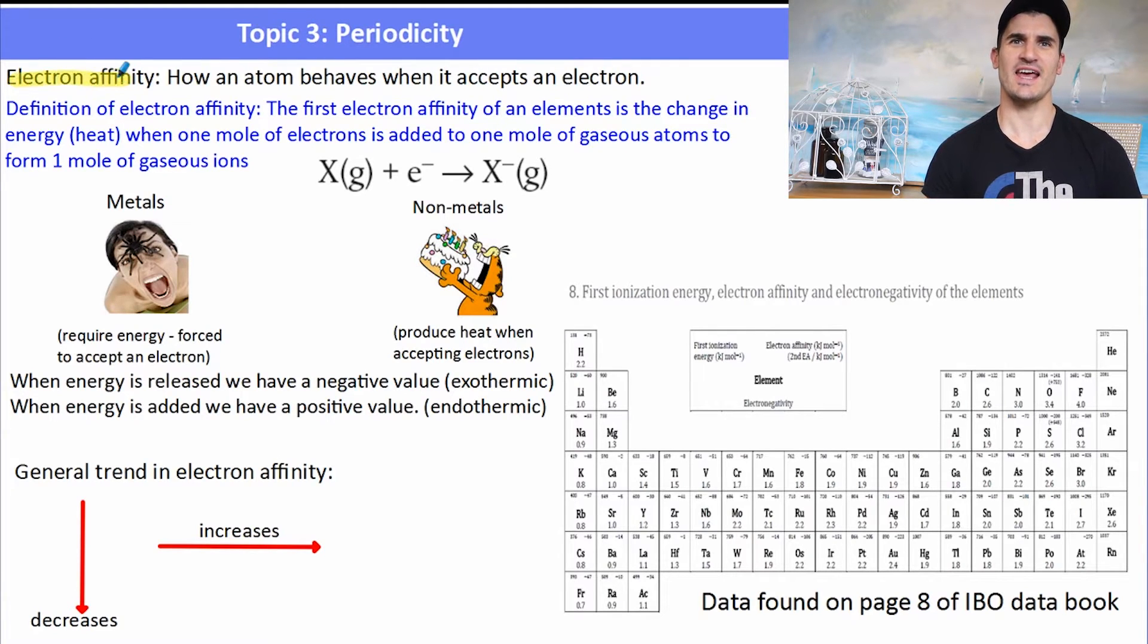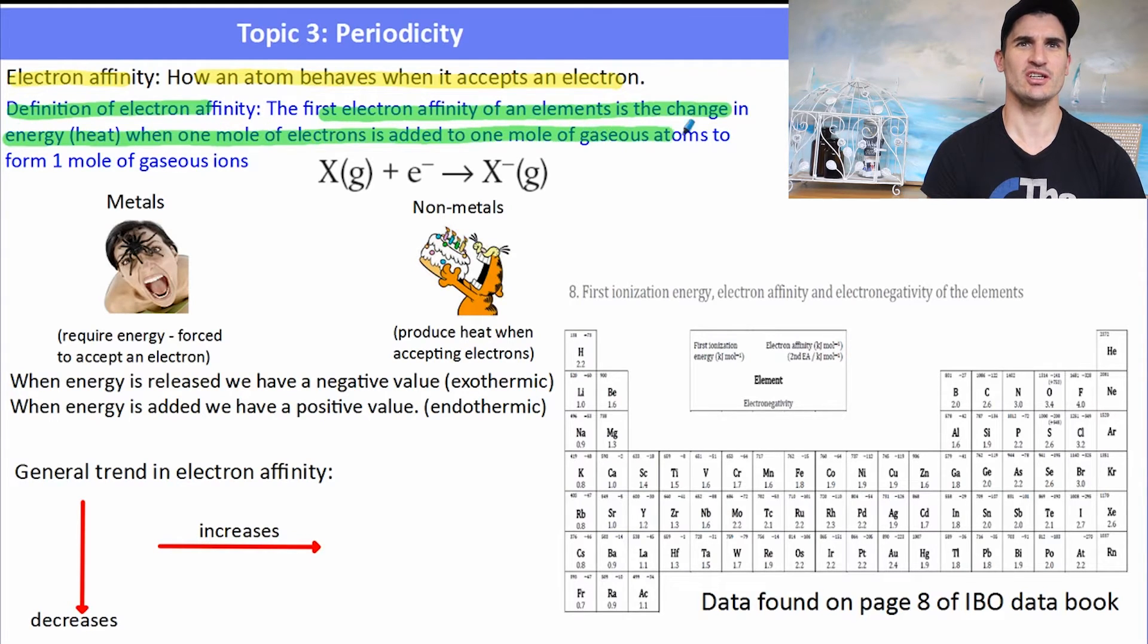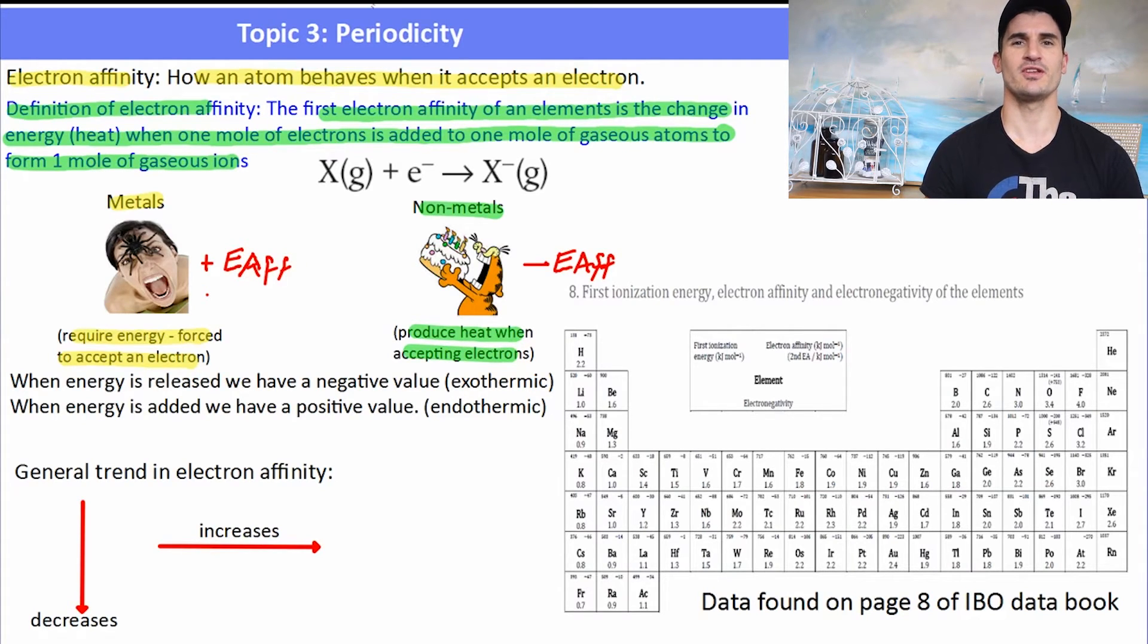Okay, electron affinity. Electron affinity is how an atom behaves when it accepts an electron. The definition of electron affinity is, the first electron affinity of an element is the change in energy when one mole of electrons is added to one mole of gaseous atoms to form one mole of gaseous ions. So here we have the metals, which require energy because we need to force them to gain electrons because they don't want to do it very readily because they're electrophobic. So what's going to happen here is they're going to have a higher electron affinity. It's going to have a positive number because we've got to give it energy to make it accept an electron. For a non-metal, a non-metal is electrophilic. And electrophilic means that a non-metal will generally release energy as it accepts an electron. So the energy released when it has a negative value is known as exothermic, which means give out. And if the energy added is positive, that means it's endothermic, which means it has to be absorbed. So we're giving the system energy.